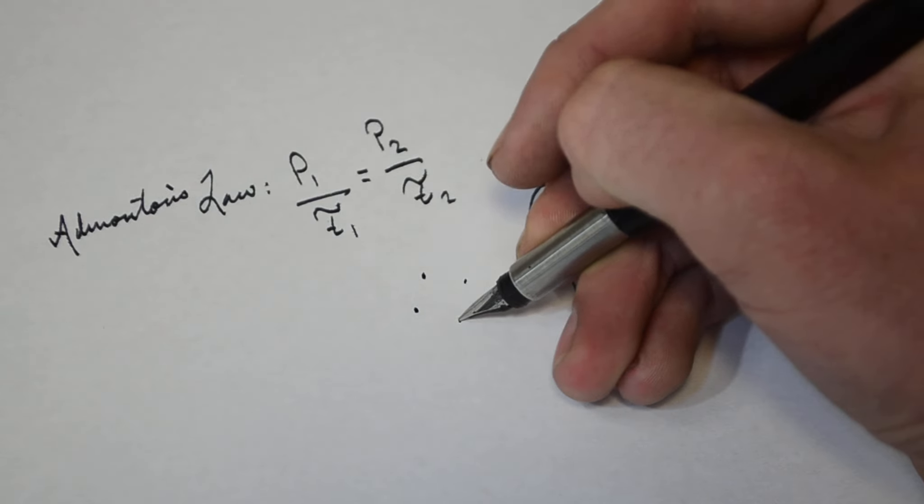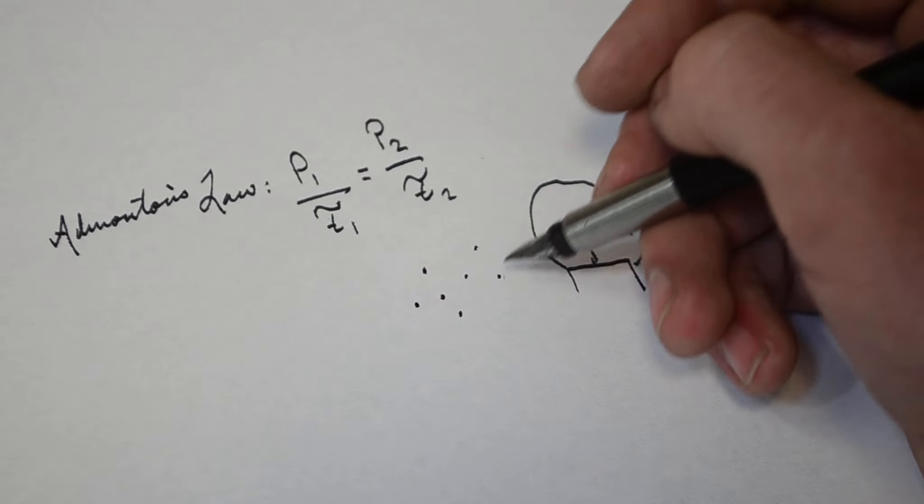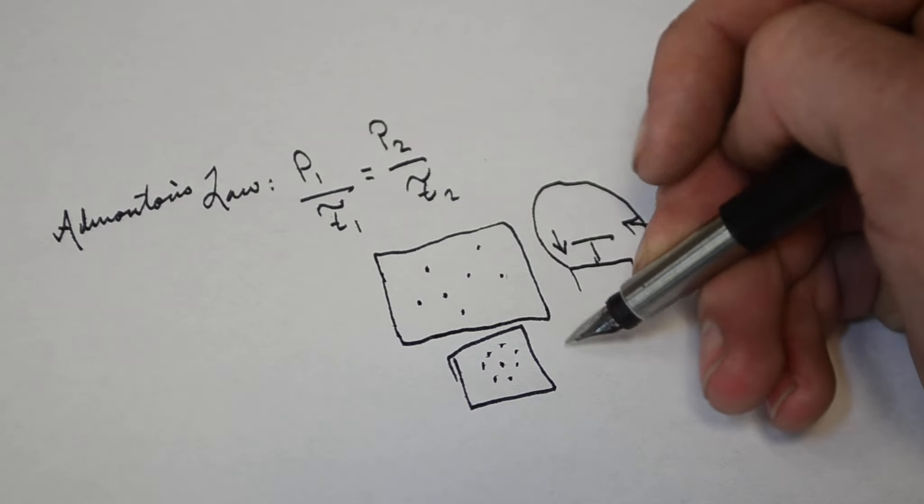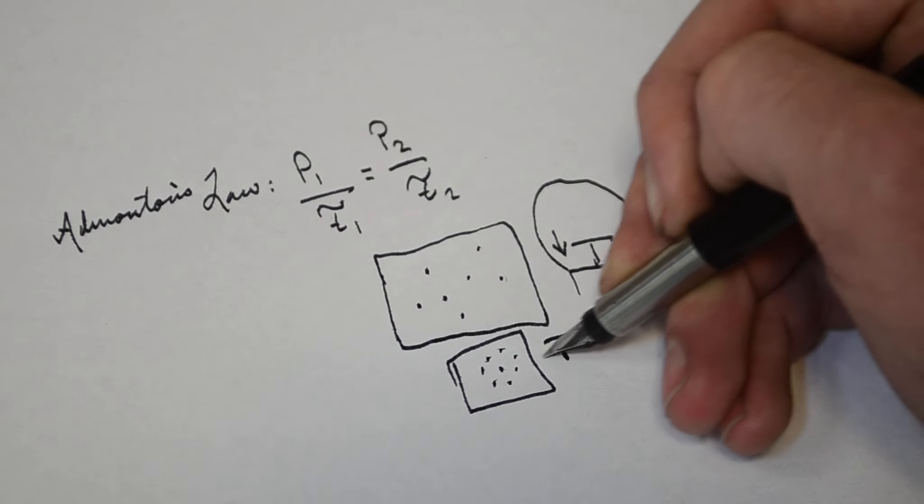As for pressure and temperature, imagine we have a cluster of particles. Now imagine if I were to get this cluster of particles and put it into a more confined spot. Since the particles are closer together, the temperature is going to be higher.